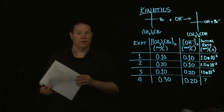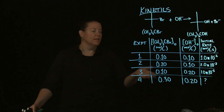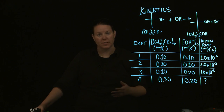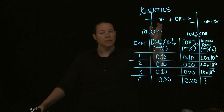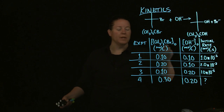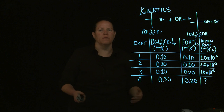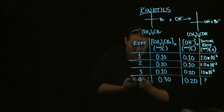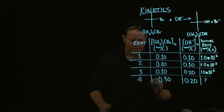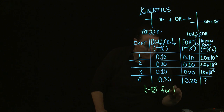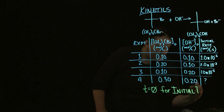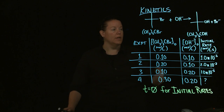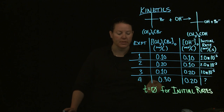That big chart of information is one I got off of a previous exam, and is exactly what you would get if you were doing an initial rates experiment. Basically what you do is you figure out what the concentration of each of the reactants is at the beginning of the experiment. That's what these zeros mean — right at the beginning, before time has really started. Essentially, T equals zero when you have an initial rates experiment.